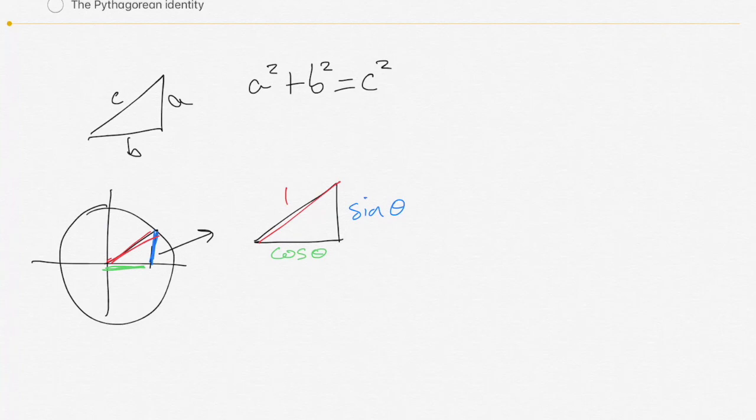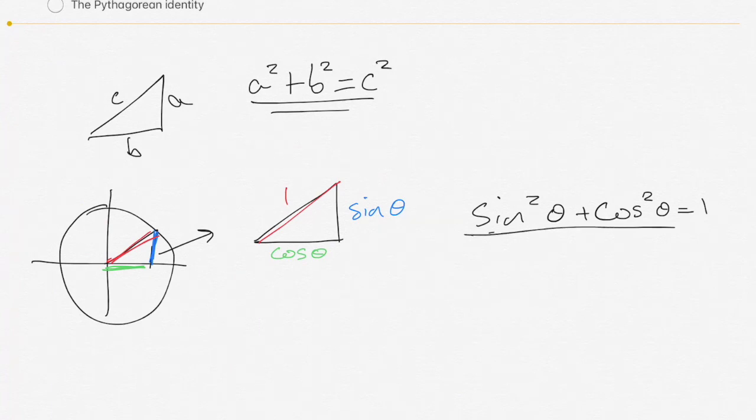So if we take those things into consideration we can rewrite our Pythagorean identity as saying we know that sine squared theta plus cos squared theta equals 1 squared, and really that's exactly the same as 1. This is what we call the Pythagorean identity for our unit circle.